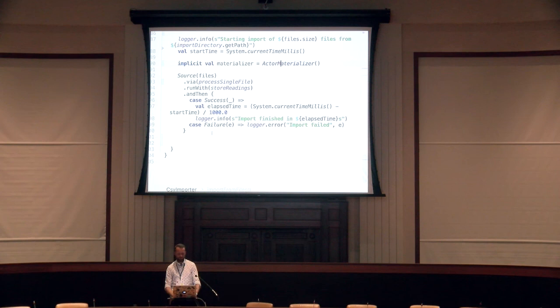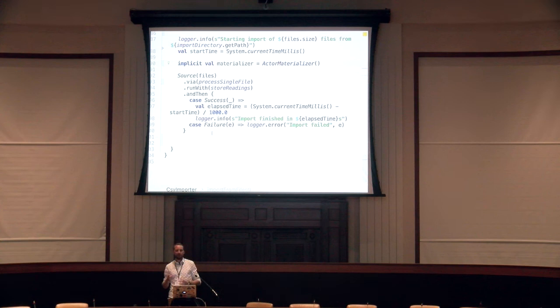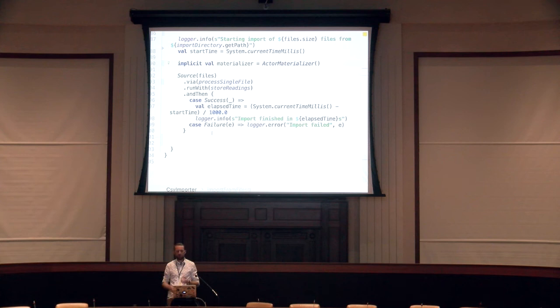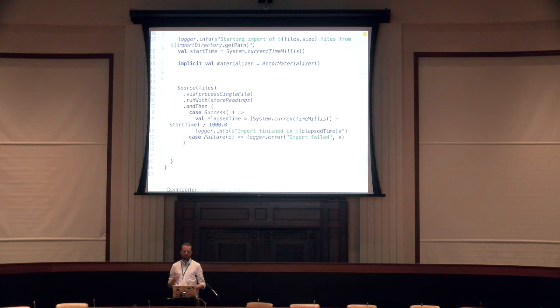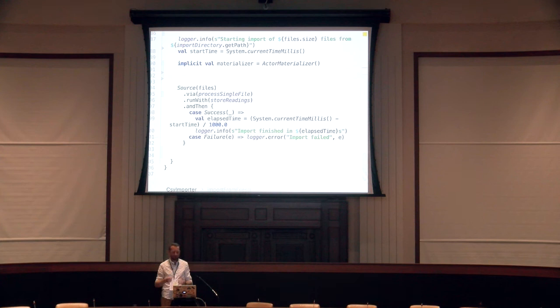We still have one unused configuration parameter: concurrent files. Currently we process files one by one since the source emits files one at a time. What we'd like to do is load balance the processing — process multiple files in parallel. We want to construct a load balancer with a number of workers, where each worker is an instance of the processSingleFile flow. To achieve this, we use the more advanced Graph DSL from Akka Streams, which lets you define your own processing graphs.